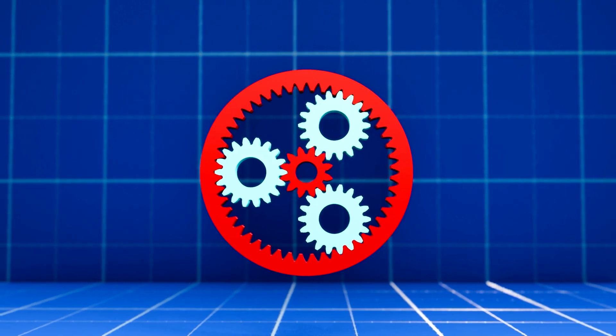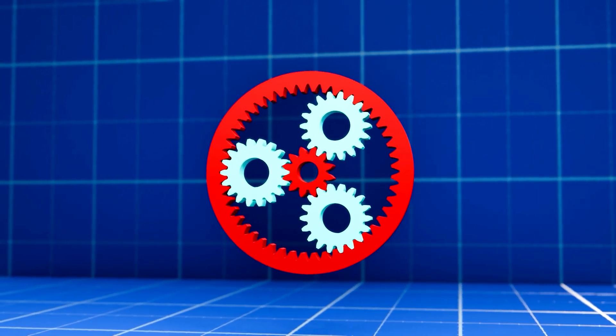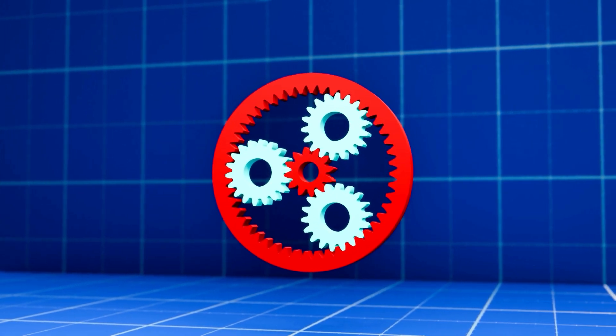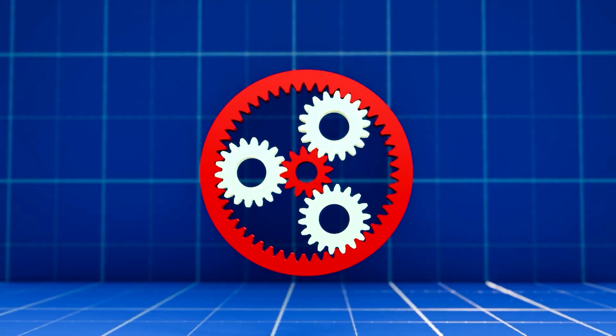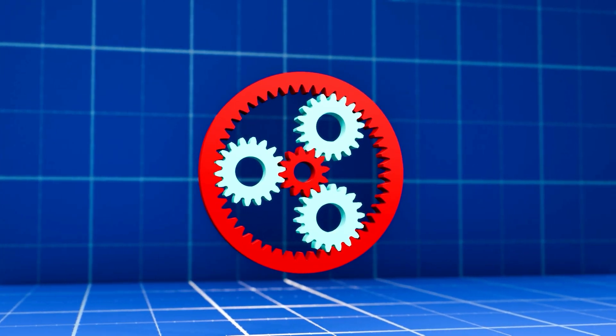A great example of spur gears in action is the planetary gearbox found in car automatic transmissions, ensuring smooth gear shifts thanks to its clever arrangement of central sun and planet gears. In a planetary gearbox, the sun and planet gears are the spur gears.